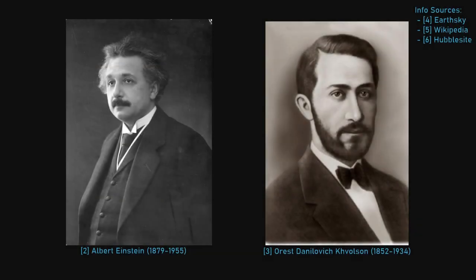In 1912, Albert Einstein predicted that light could be bent by a gravitational body, an idea that he elaborated upon in his Theory of General Relativity, published in 1915.